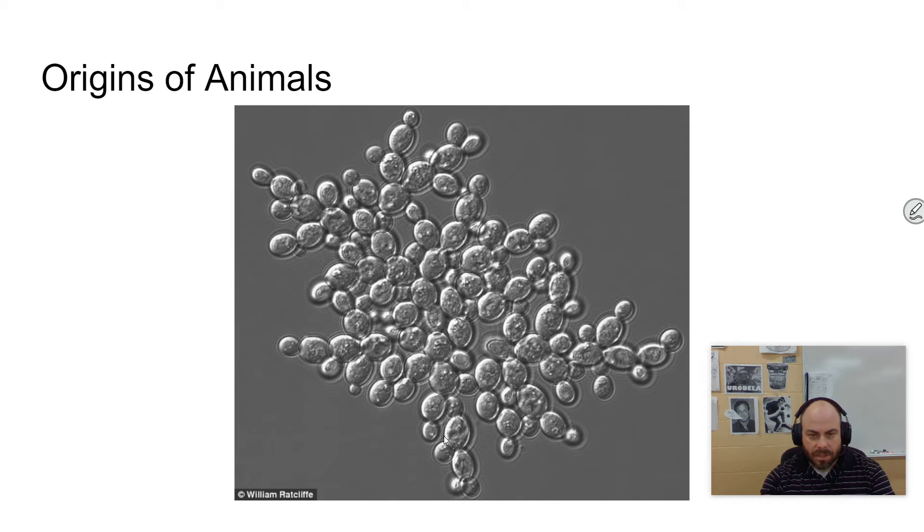Cell specialization, this also allows for specialization, so not all cells are doing the same thing. Some cells are doing other things. It's kind of like how civilization arose. Once everybody was doing different things, we were able to create cities and be very successful. And so multicellularity, very similar kind of thing to that.